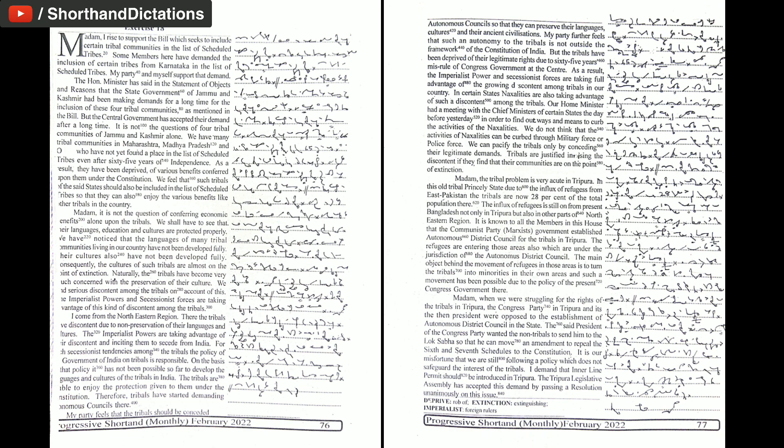Madam, I rise to support the bill which seeks to include certain tribal communities in the list of scheduled tribes. Some members have demanded the inclusion of certain tribes from Karnataka. My party and myself support that demand. The Minister has said that the state government of Jammu and Kashmir had been making demands for a long time for the inclusion of these four tribal communities. But the central government has accepted their demand after a long time.